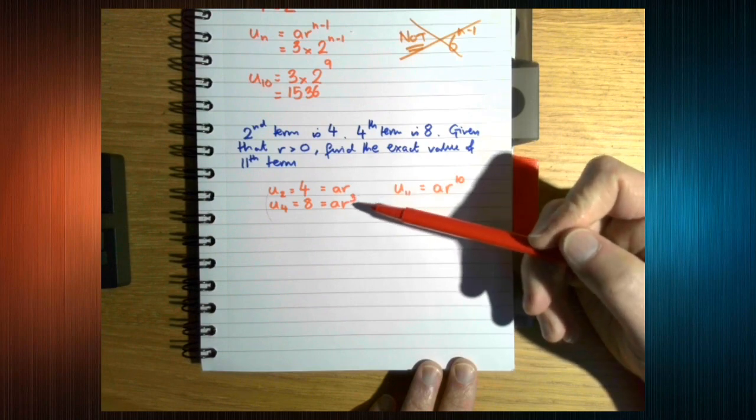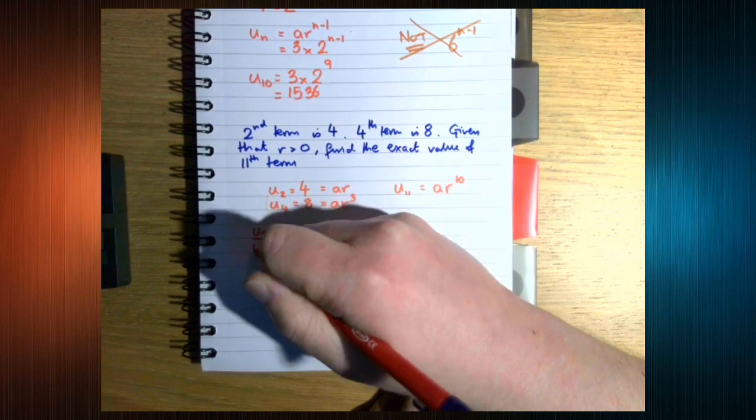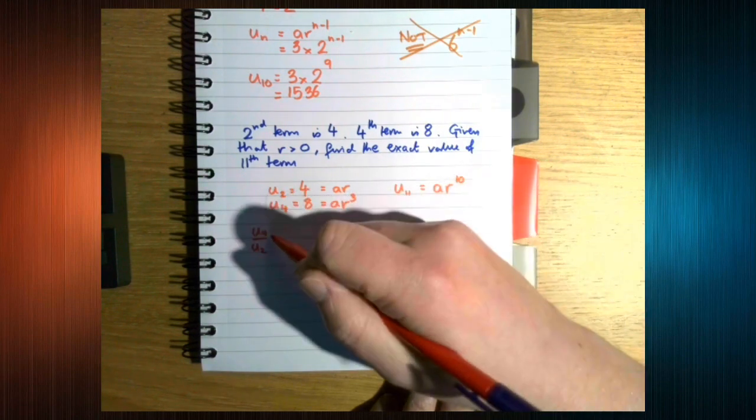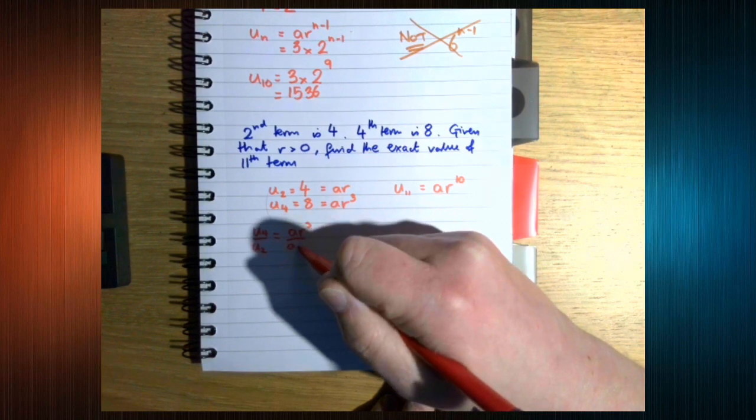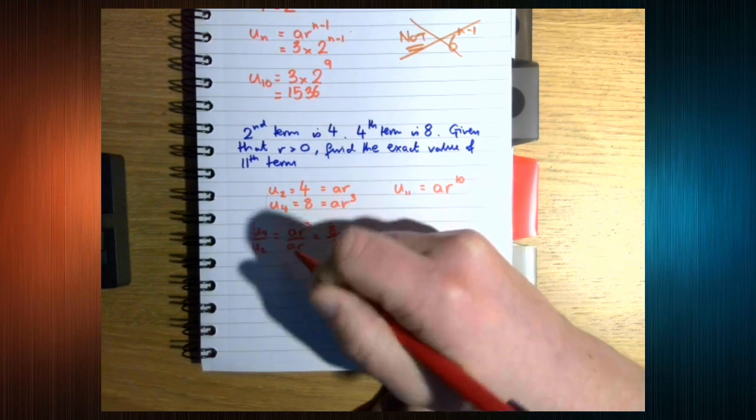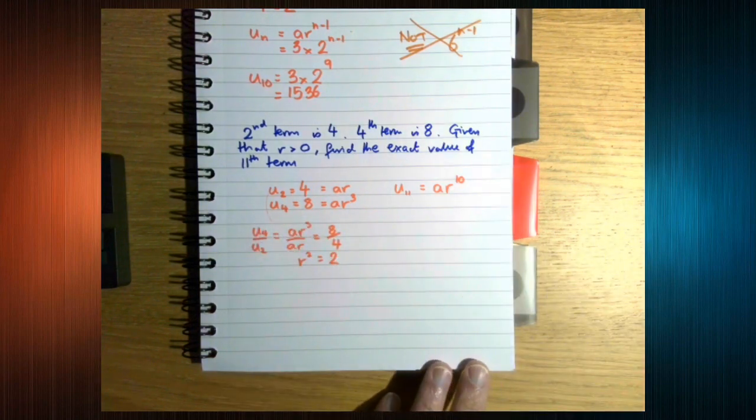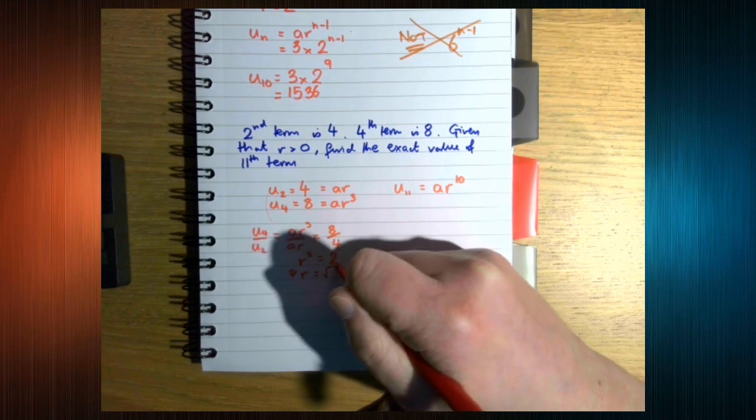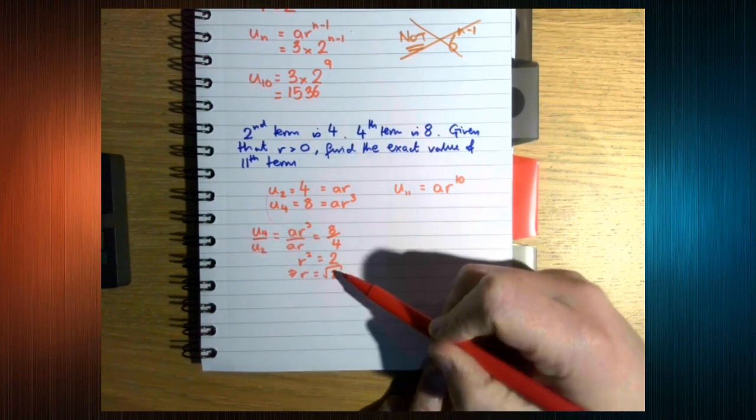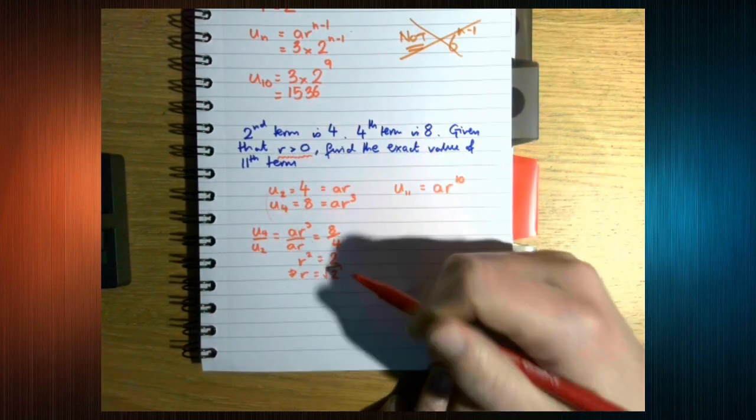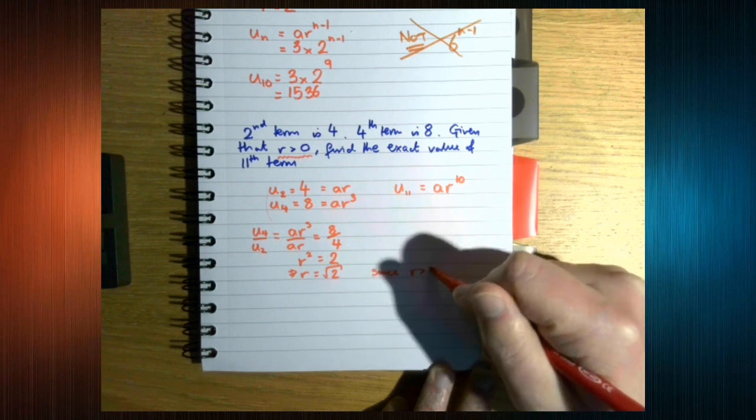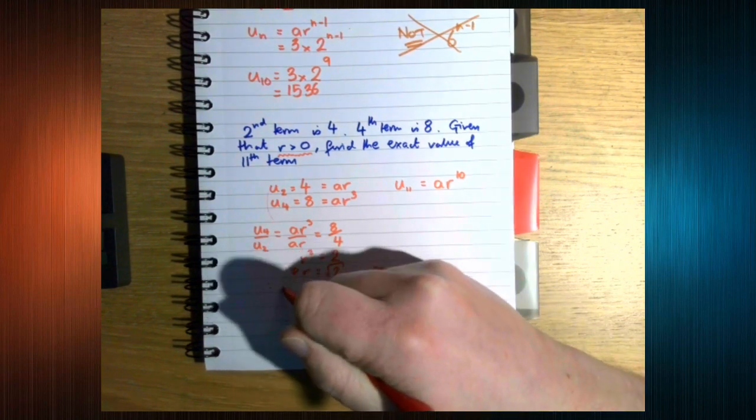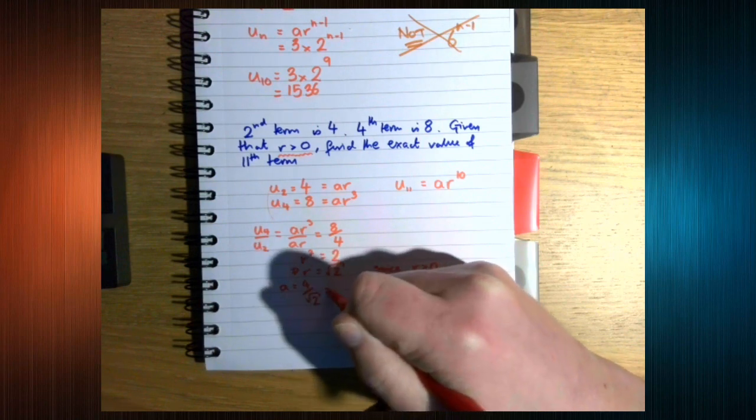Then instead of subtracting, let's do u4 divided by u2. Why do we want to do that? It's going to cancel out the a's. We're going to get 8 over 4, so we get r squared is 2, which means that r is root 2. Normally we'd need to worry about plus or minus, but that's where this comes in. We don't need to worry about it. This tells us that a is 4 over root 2, which is 2 root 2.